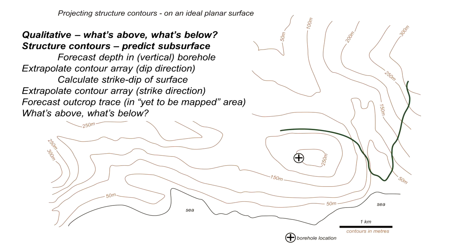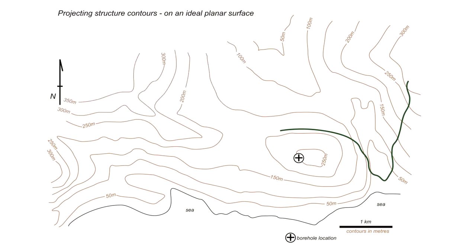Let's start with the qualitative look. A useful first step is to understand the relationship of the outcrop pattern to the topography. Looking at the map, this area here is a valley, and to the west of the valley is a hill — going up to slightly above 250 metres, close to where the borehole location is.